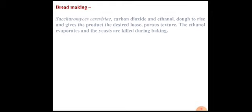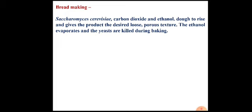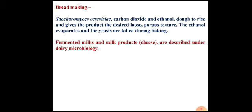Microbes are also useful in making bread. Saccharomyces cerevisiae produces CO2 and ethanol; the CO2 causes the dough to rise, giving bread a loose and porous texture. Fermented milks and other fermented products like cheese and buttermilk are further examples. These will be discussed in more detail under dairy microbiology, which particularly deals with fermented food products produced using milk.